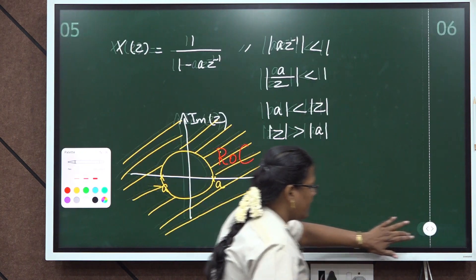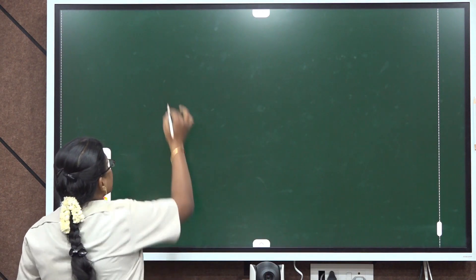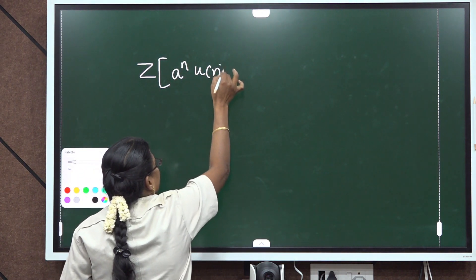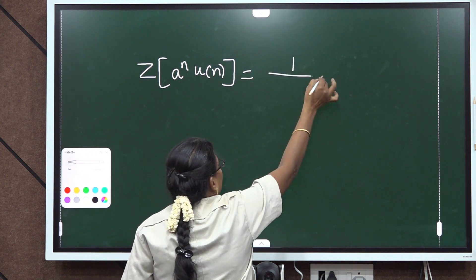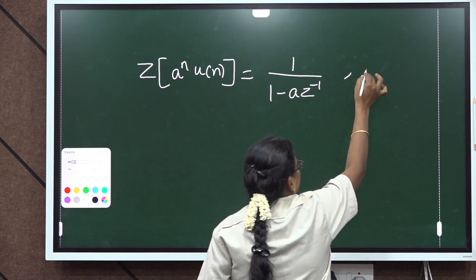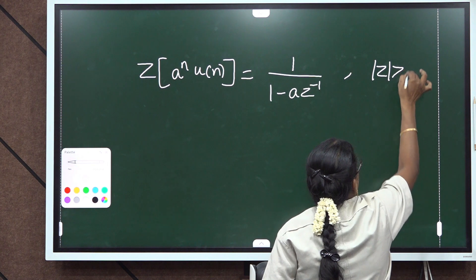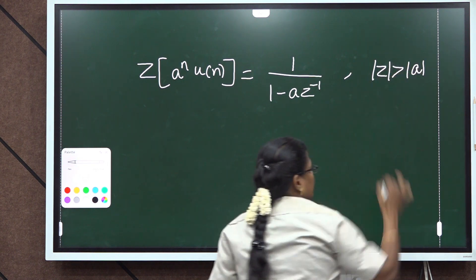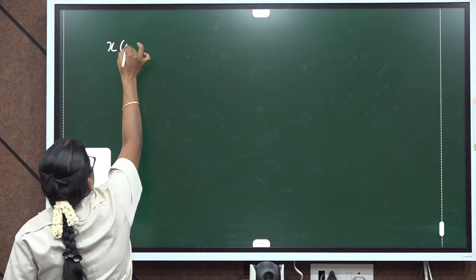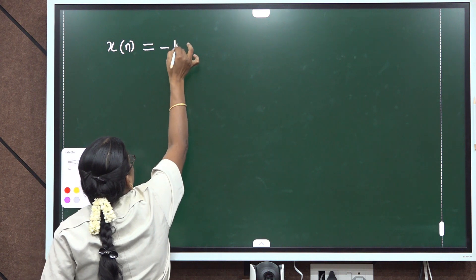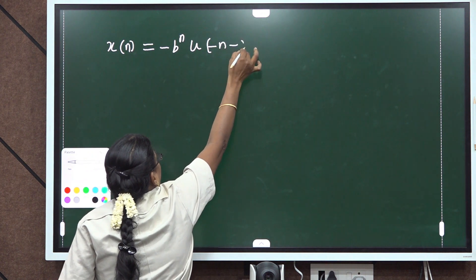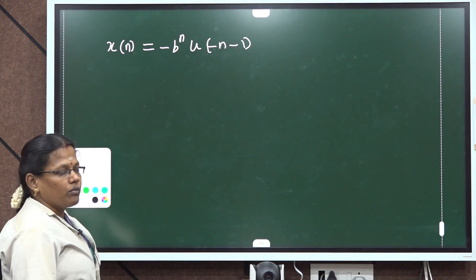So, what we have calculated: the Z-transform of a power n times u(n) is equal to 1 by 1 minus a z⁻¹, and its ROC is mod z greater than mod a. The next problem is: find the Z-transform and its ROC of x(n) equal to minus b power n times u(minus n minus 1).